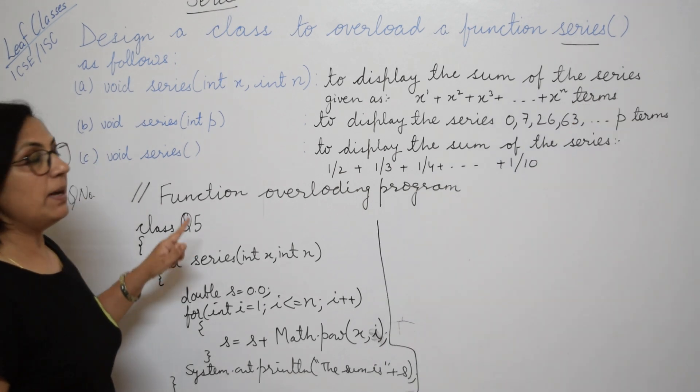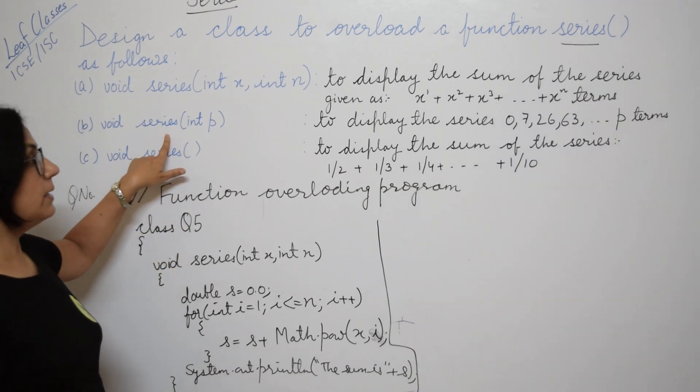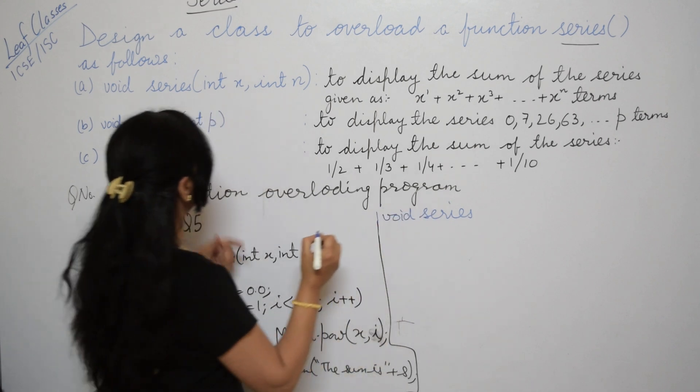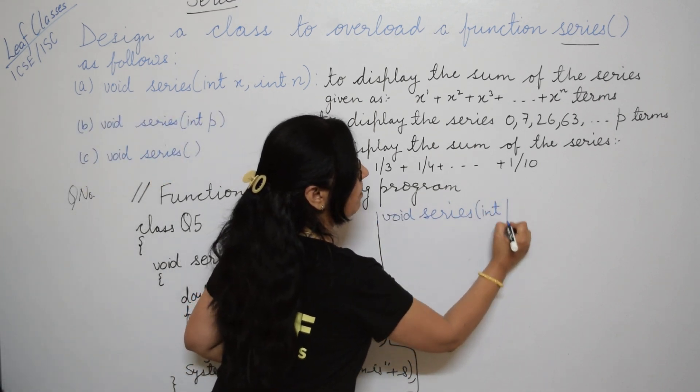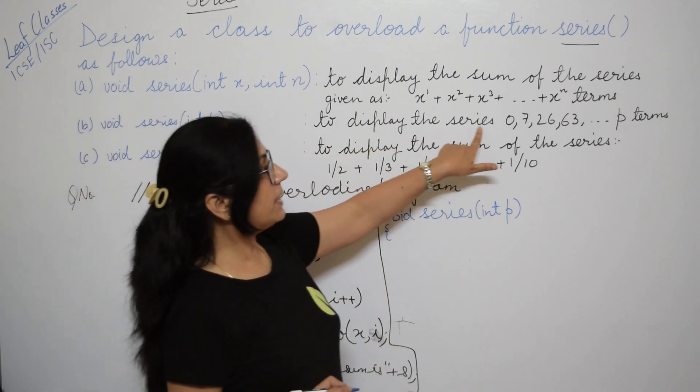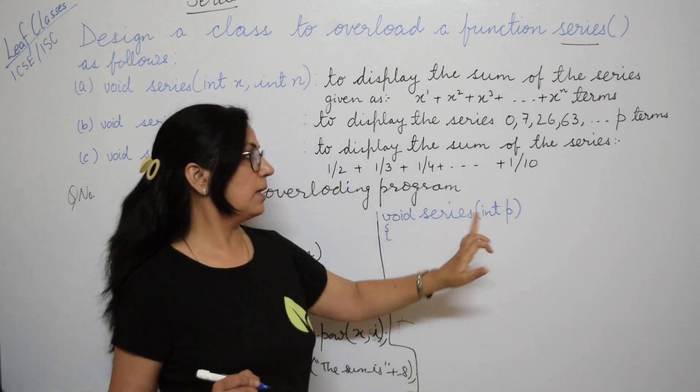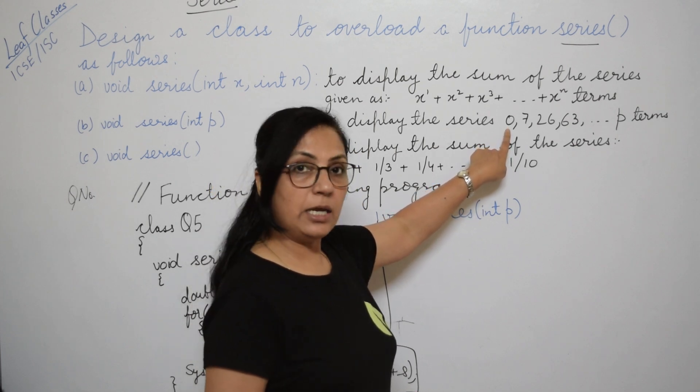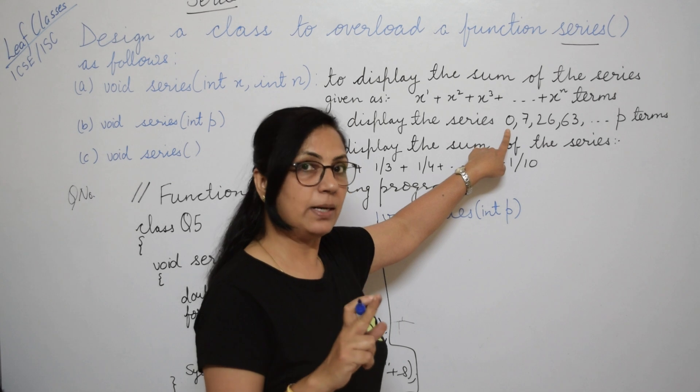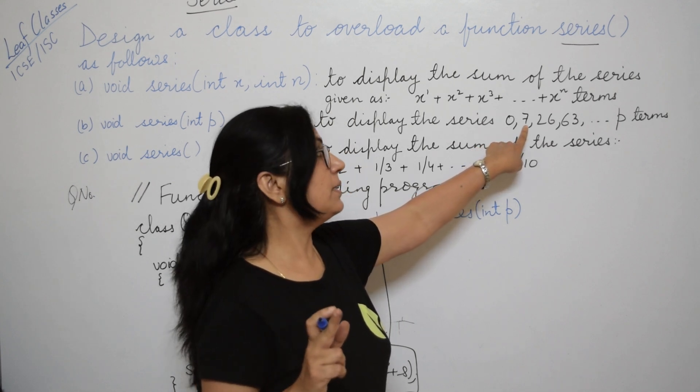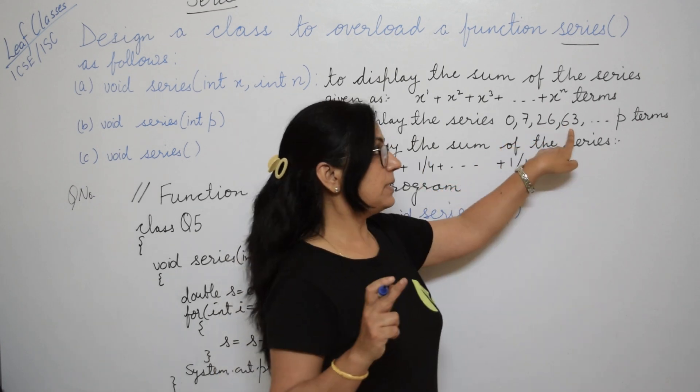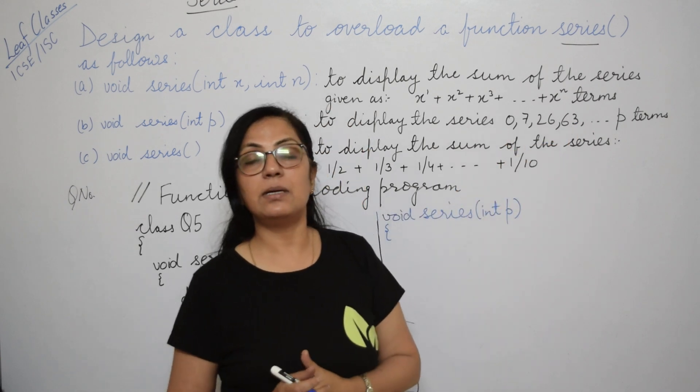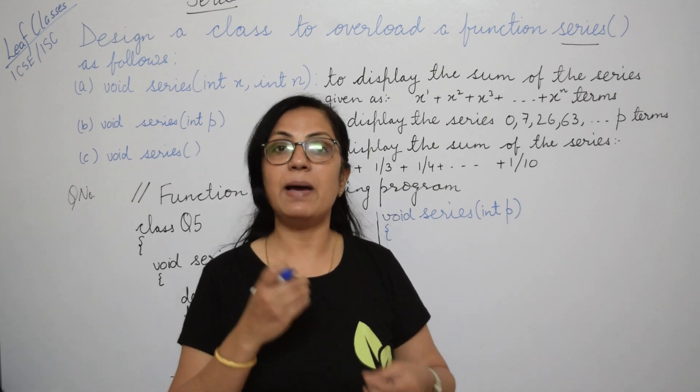Similarly we can write the function definition for the second one. We write another function: void series, and this function is taking only one parameter, int p. The function definition says to display the series 0, 7, 26, 63 up to p terms. If you notice the terms: 1 cube minus 1 is 0, 2 cube 8 minus 1 is 7, 3 cube 27 minus 1 is 26, 4 cube 64 minus 1 is 63. You're getting these terms by cube of the numbers minus 1, from 1 to p.